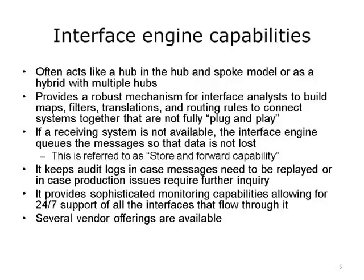An interface engine will often have the following capabilities. It will usually act as a hub in a hub-and-spoke model, or as a hybrid with multiple hubs. Interface analysts implement interoperability based on user and business requirements. The interface engine provides them with robust capabilities to build maps, filters, translations, and routing rules to achieve interoperability between systems that are not fully plug-and-play. The interface engine provides standard connectors and formats to facilitate implementation; for example, most interface engines supply pre-built HL7v2 message structures. The interface engine queues messages so that, in the event that a receiving system is unavailable, the data will not be lost. This is referred to as store and forward capability.